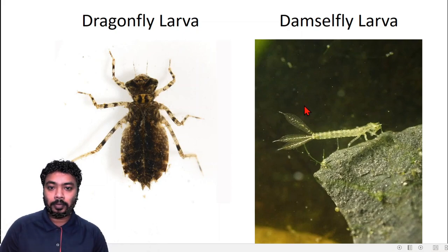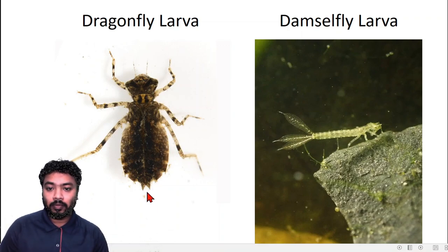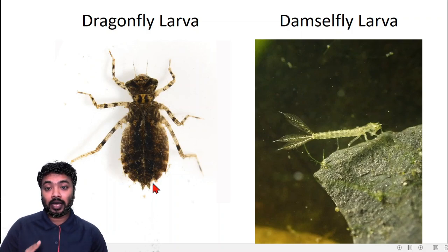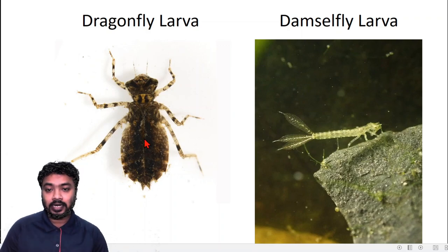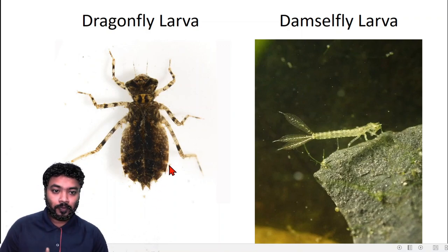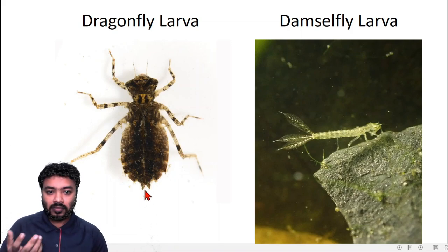The dragonfly larva does not have caudal appendages because they have their respiratory organ inside their body. They have rectal gills inside the body, and they inhale water from their anus — this anal pore — taking water in and pushing it out. That's why they don't need separate caudal gills.